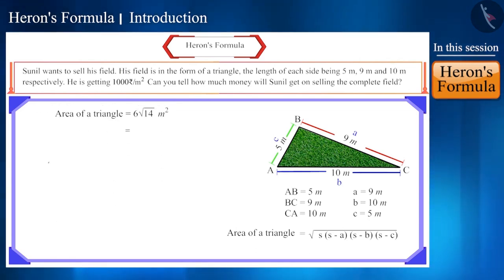Friends, the value of root 14 is approximately 3.74165 and in this way the total area of the field will be 22.449 or 22.45 square meter.